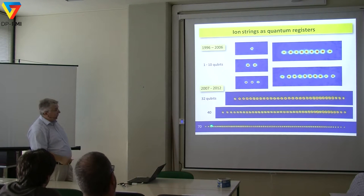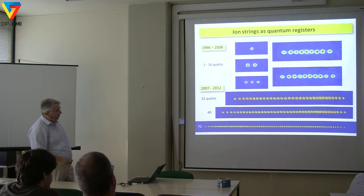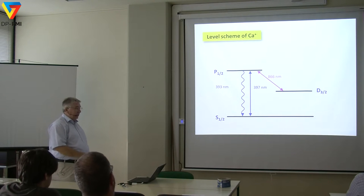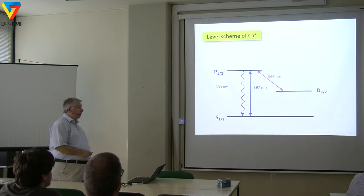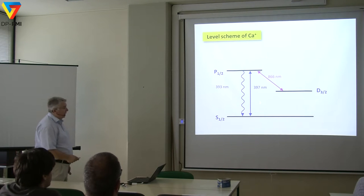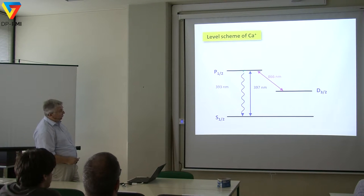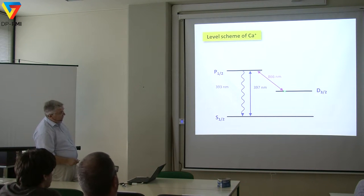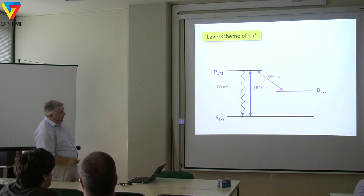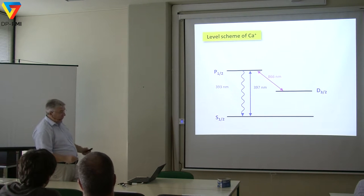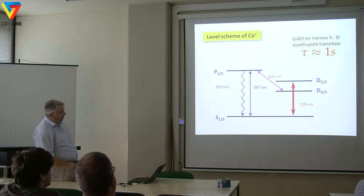The atomic physics is such that we have two radiations in the system. To see the ion via resonance fluorescence, we excite at 397 nm, but there's a branching ratio — the ion decays to the D-3/2 state which lives about a second. So the ion would get stuck there if we don't apply a re-pumping laser at 866 nm to close the cycle. That's how we do Doppler cooling and detection of fluorescence.